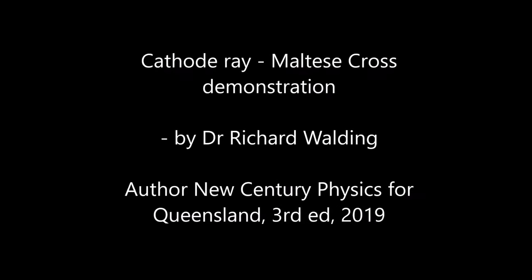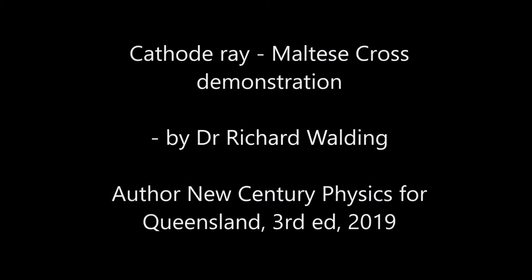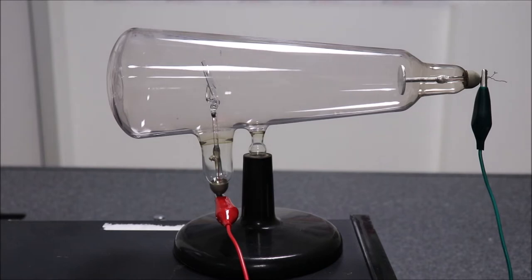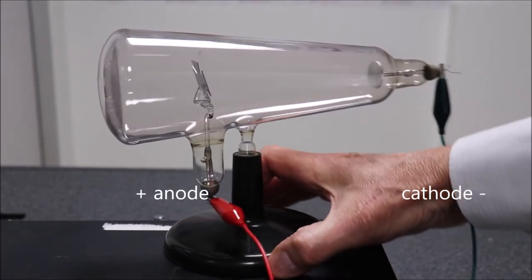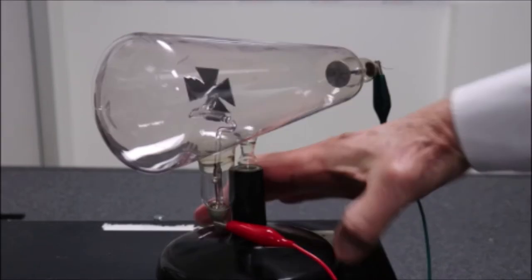This is a simple demonstration of a cathode ray tube in which we use a Maltese cross made out of aluminum as the anode and it casts the shadow of the electron beam on the front of the glass tube.